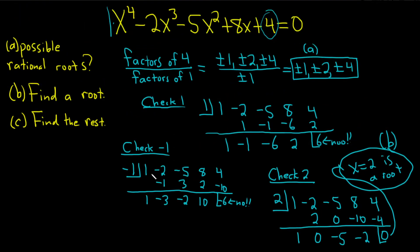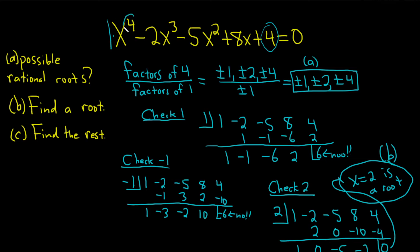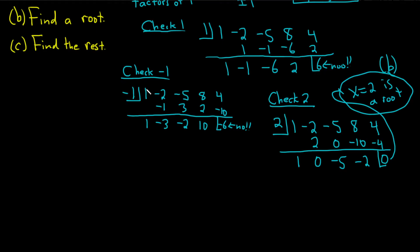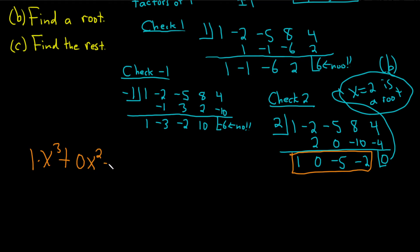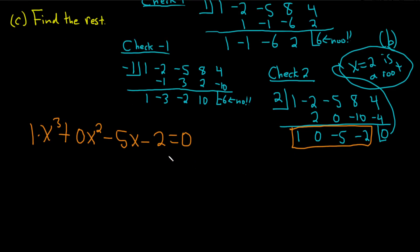Now we go back to the original, which is degree 4. We take the results from synthetic division and start at one degree less. So we were at x to the 4th, so we start with x cubed. The new polynomial is x cubed plus 0x squared minus 5x minus 2, set equal to 0. It's always one degree less than what you started with.